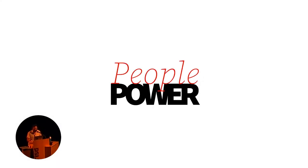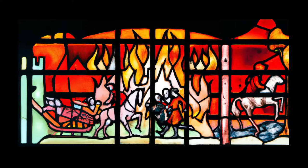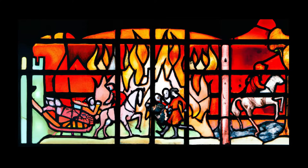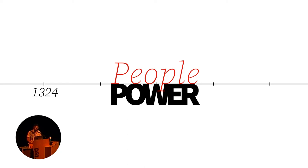Let's go back in time to consider how people power worked in the past. We're going quite backwards to 1324, Bruges, Flanders, today's Belgium. In September 1324, a mob of angry Flemish peasants gathered at the gates of their lord's castle. The time for negotiation was over, and the mob stormed the castle with torches and pitchforks. Fire is an affordance for violence - more people holding more torches means more power. There was a direct correlation between people and power.